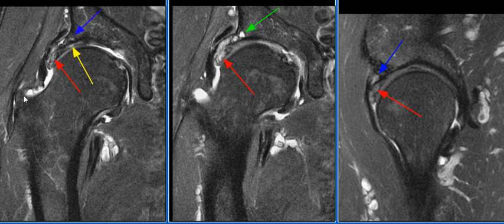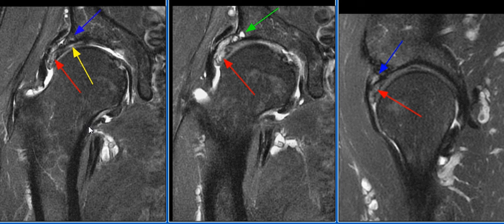There is mild tendinosis of the gluteus medius and minimus muscles along with edema in the subgluteus minimus and medius bursa. Also noted is tendinosis of the common hamstring origin.